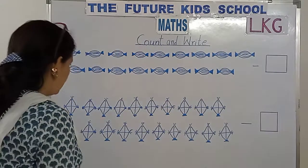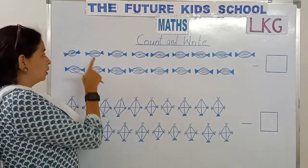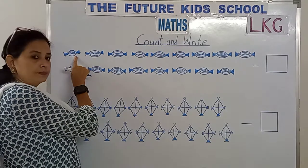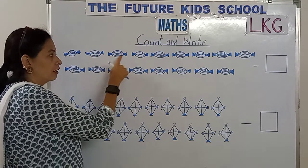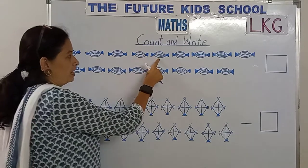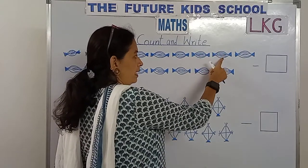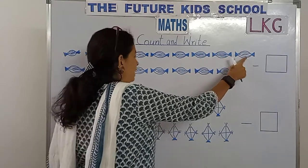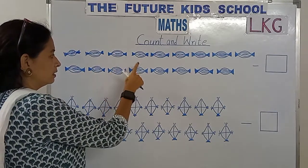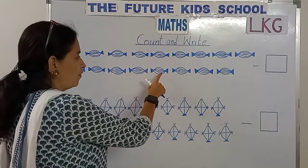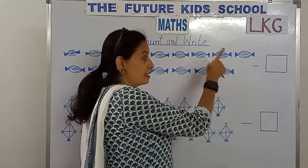Now let's count together, children. Count along with me, slowly. 1, 2, 3, 4, 5, 6, 7, 8, 9, 10, 11, 12, 13, 14, 15, 16, 17.